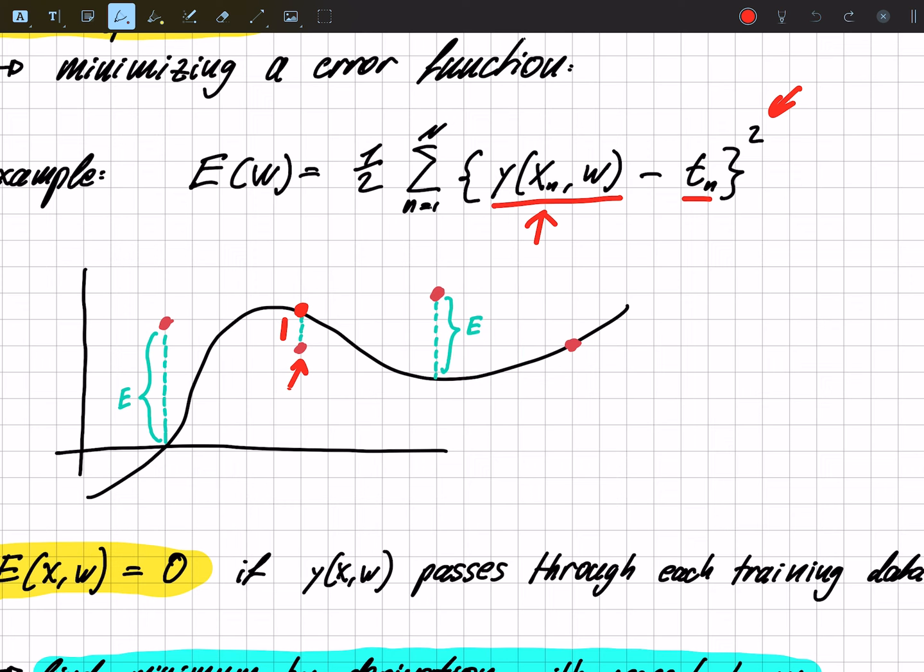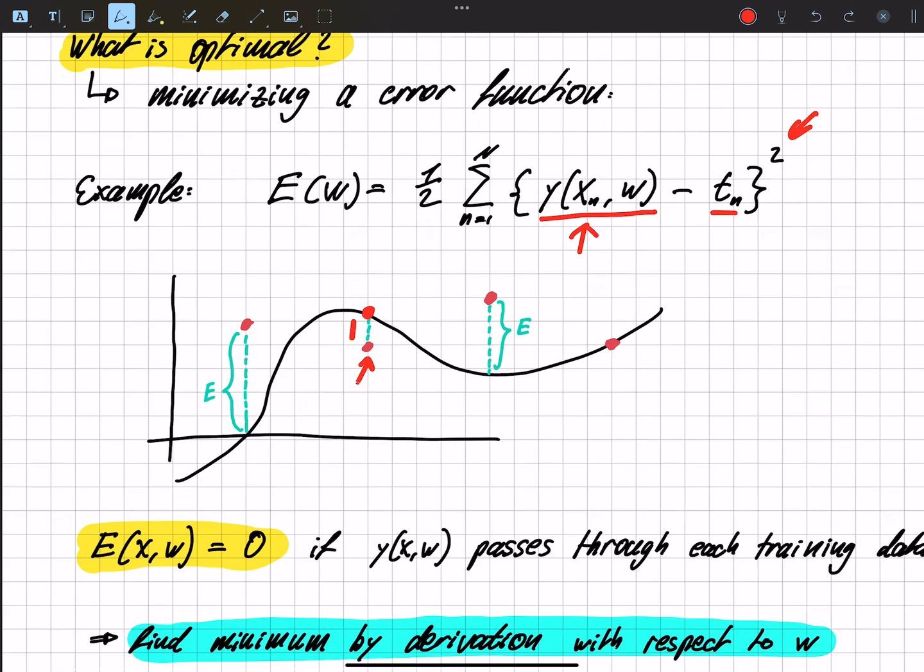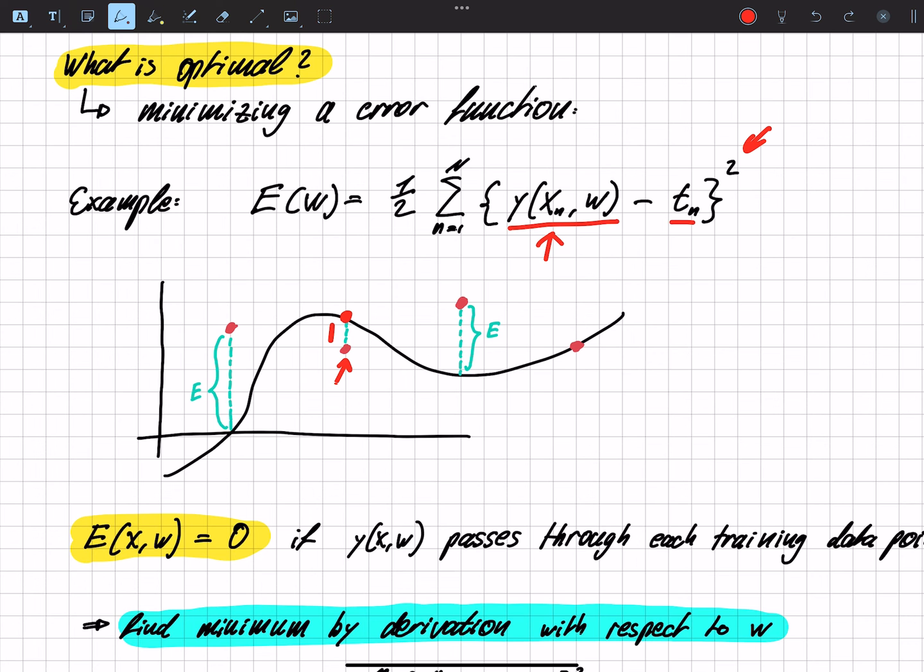And our goal is to minimize this area. And as soon as we found all the correct w's, the curve will go through each and every data point. And this is exactly where the error is zero.